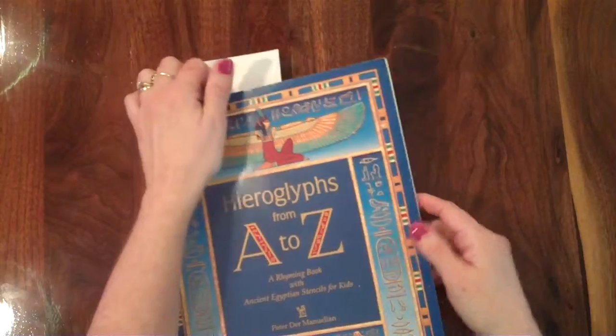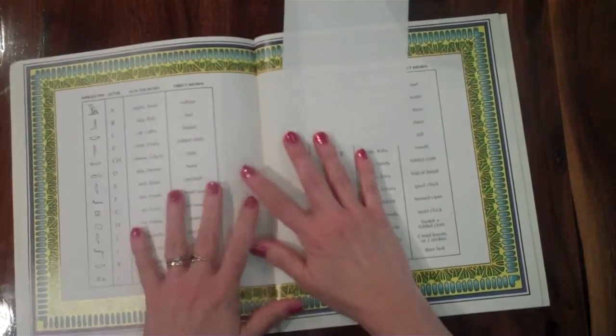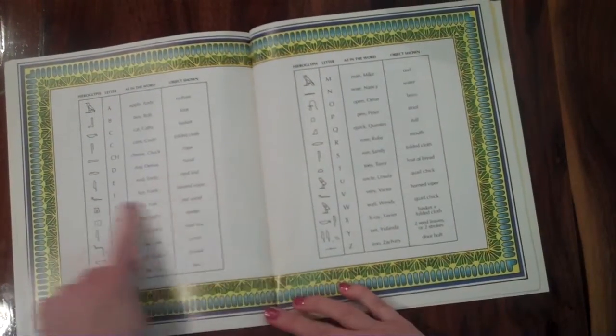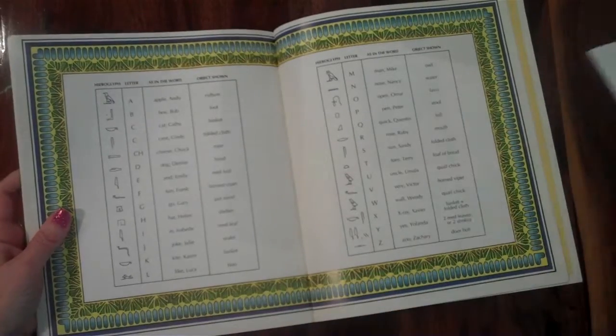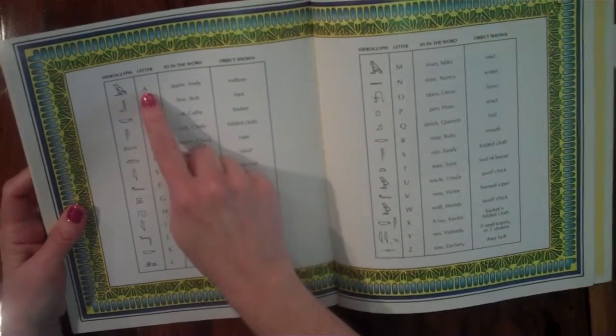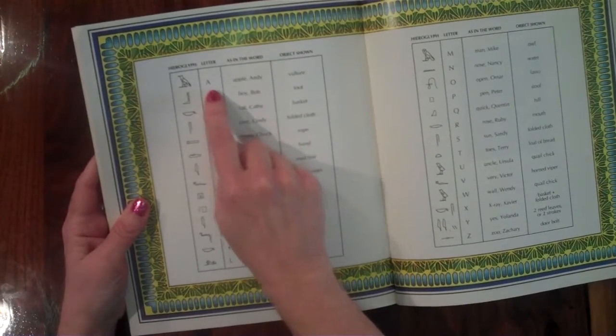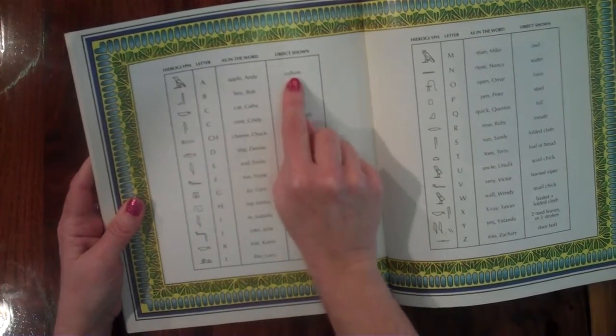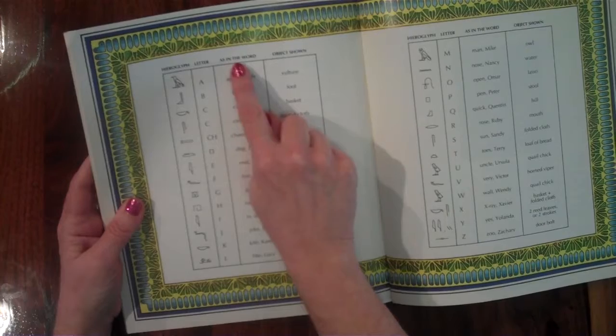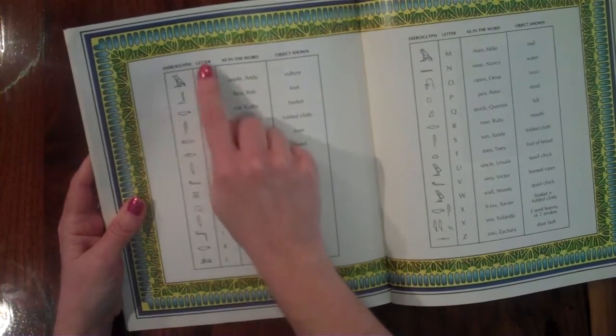So what I'm going to be doing is using in my book here some hieroglyphs that have the equivalent to our alphabet. So for instance, here we see a bird, this is actually a vulture. It says object shown, as in the word, and the hieroglyph, and our own letter.